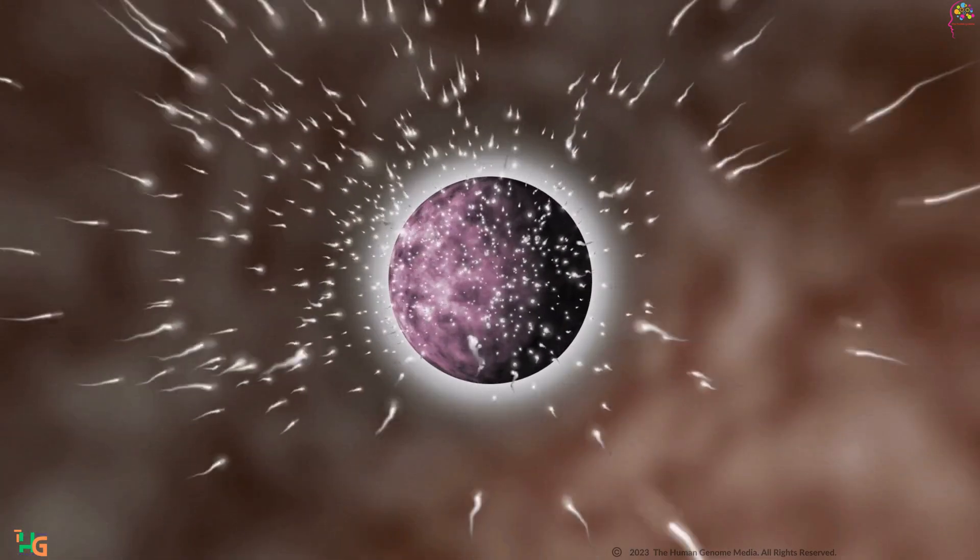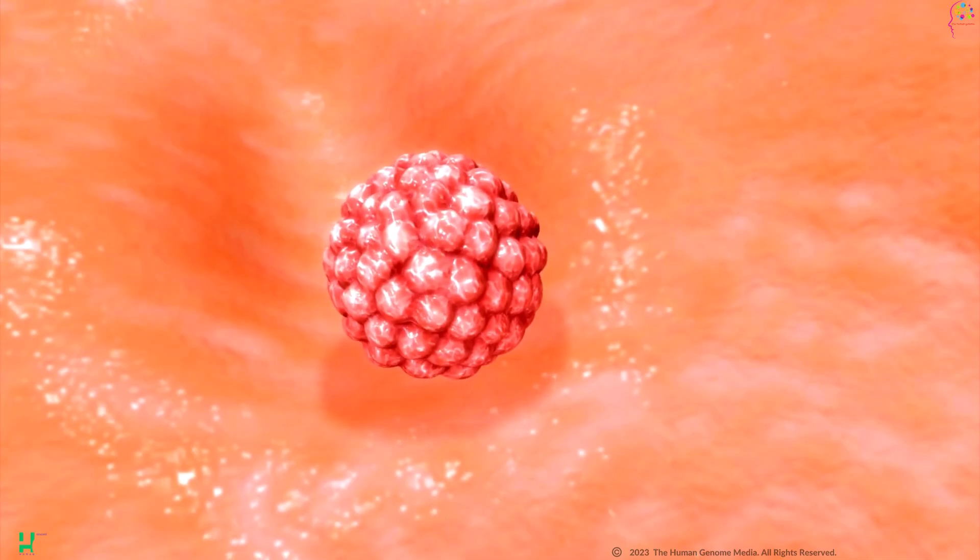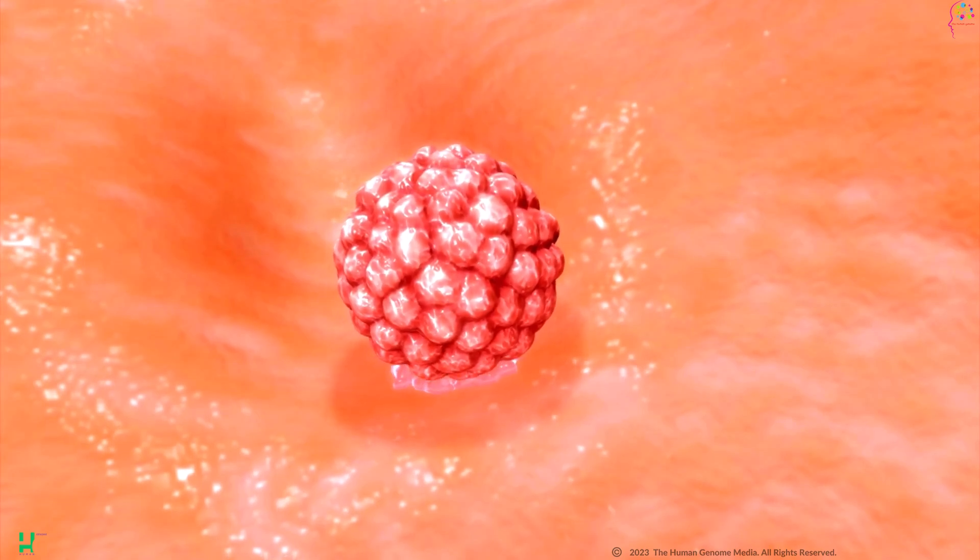During fertilization, sperm meets an egg in the female reproductive system, resulting in the formation of a zygote, which eventually develops into an embryo.